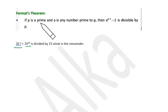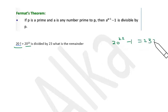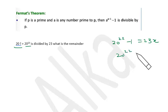According to Fermat's theorem, if p is a prime number and a is any number co-prime to p, then a raised to p minus 1 minus 1 is divisible by p. Here the prime number is 23 and a is 20, which is co-prime to 23. So 20 raised to 22 minus 1 is a multiple of 23, meaning 20 raised to 22 equals 23x plus 1. So when 20 raised to 22 is divided by 23, the remainder is 1.